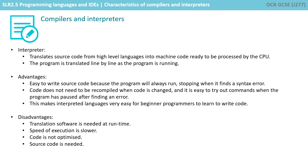Code does not need to be recompiled when the code is changed, and it's easier to try out commands when the program has paused after finding an error. This makes interpreted languages very easy for beginner programmers to learn to write code. The disadvantage is that translation software is needed every time the program is run, causing slower execution speed over compiled machine code. The code isn't optimised, and the original source code is needed.